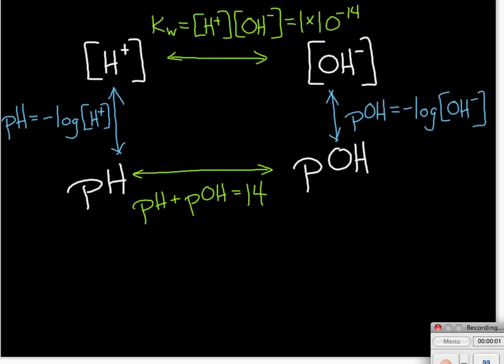The purpose of this mini-lecture is to do some sample problems involving calculations of pH and pOH and the concentrations of the hydrogen ion and the hydroxide ion. It assumes that you are a little bit familiar with the subject. If you're not, please go back and take a look at the mini-lecture that just deals with pH and pOH.